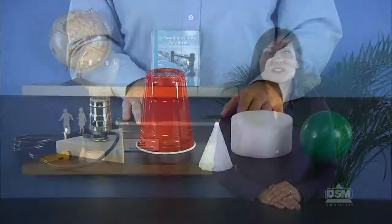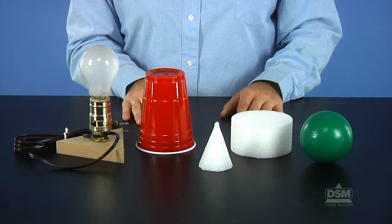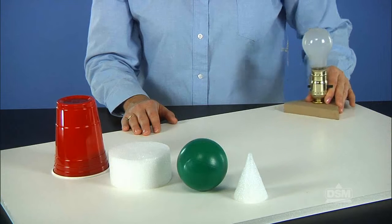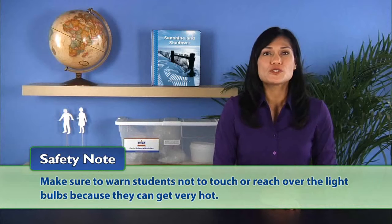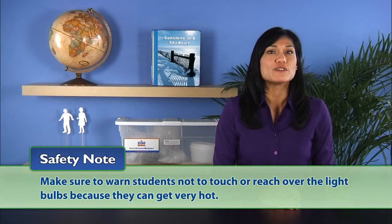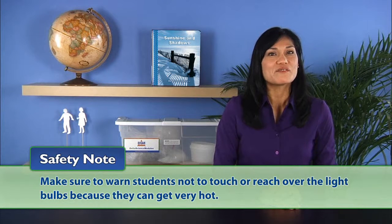Back in the classroom, assign each team of four to a light source and give them four different objects, including a cone or a disc. Instruct students to set up their objects about a meter away from the light source and arrange them in a straight line. Remember to warn students not to touch or reach over the light bulbs because they can get very hot.